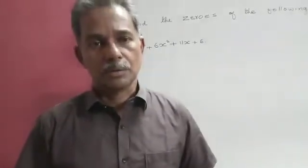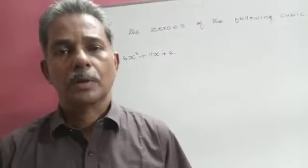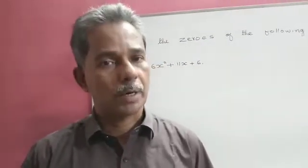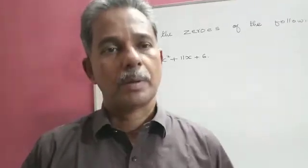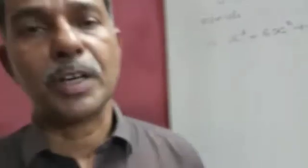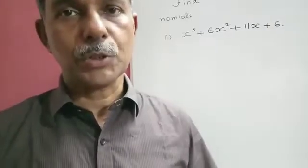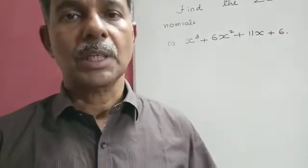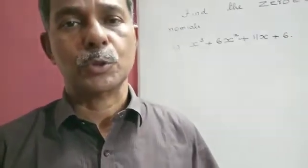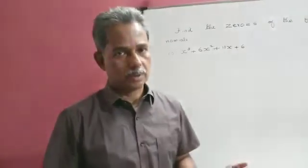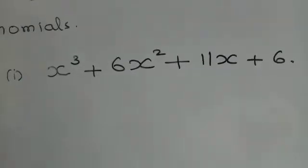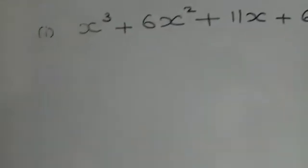You have studied how to find the zeros of a quadratic polynomial and biquadratic polynomial. One more case is finding the zeros of a cubic polynomial. The procedure for both quadratic and biquadratic polynomials is to factorize each into linear polynomials, equate each linear polynomial to zero, and find the zeros. The same procedure is followed for a cubic polynomial as well, as you have studied in class 9.